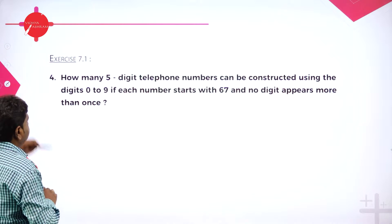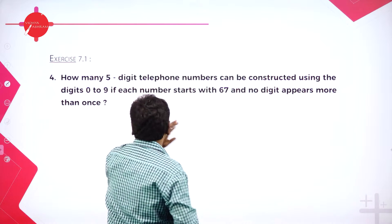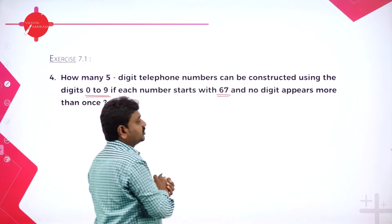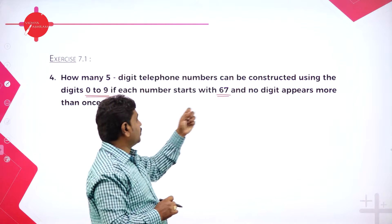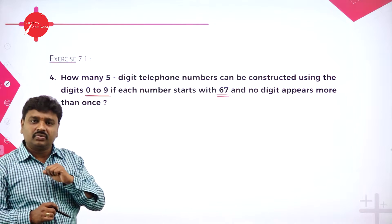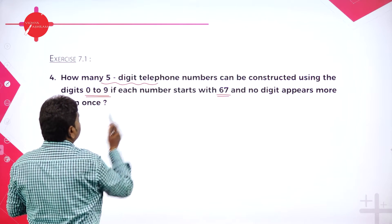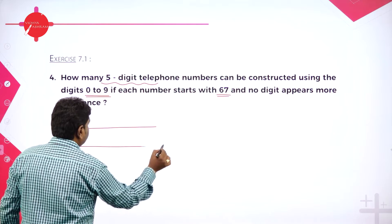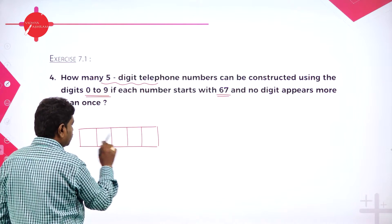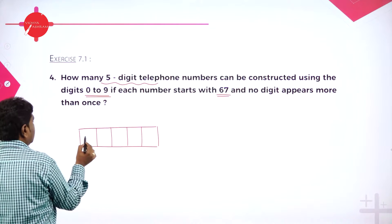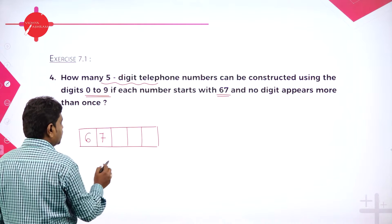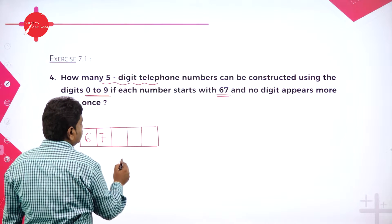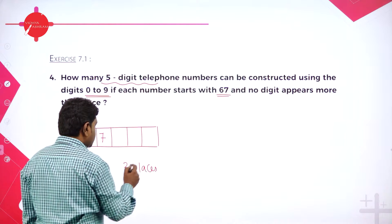How many 5-digit telephone numbers can be constructed using digits 0 to 9, starting with 67, with no digit appearing more than once? We have 5 boxes. The first place is already filled by 6 and the second place is filled by 7. So we are left with 3 remaining places to fill.